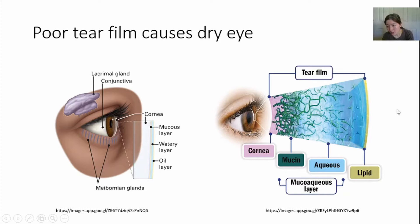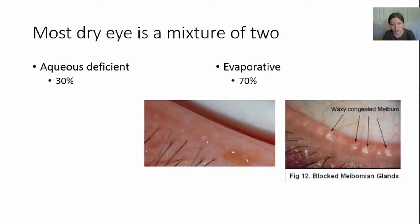On the surface of the tear film is a very thin but really important layer — the lipid layer. The lipid layer being on the surface serves a purpose: the aqueous or fluid part of the tear can be held in place, sealed in place. Like you put oil on top of water, the water can be maintained there without evaporation. So that's exactly what the lipid does in our tear film.